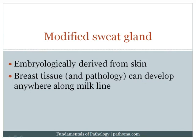One important, particularly high-yield point about breast embryology is that the breast develops from the milk line, which runs all the way from the axilla down to the vulva. Breast tissue can develop anywhere along that line. Patients can have extra nipples, extra breast tissue, and even breast cancer anywhere along that line. It's relatively rare, but what's rare shows up on exams.